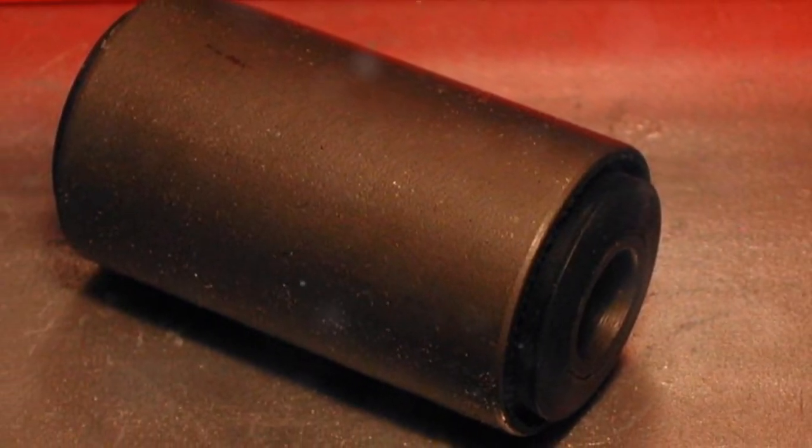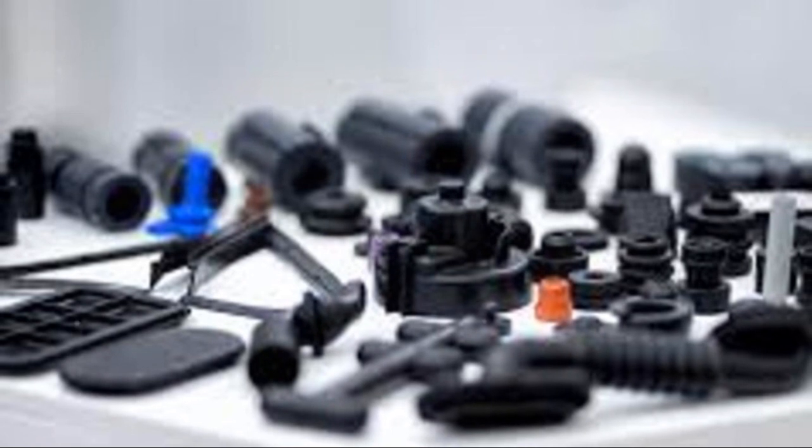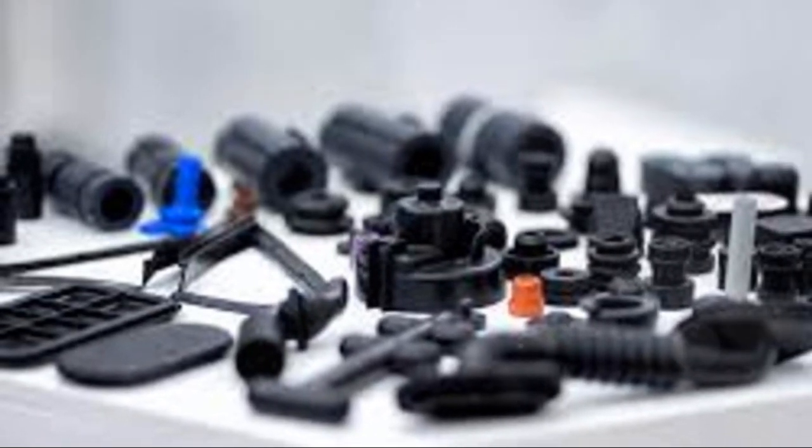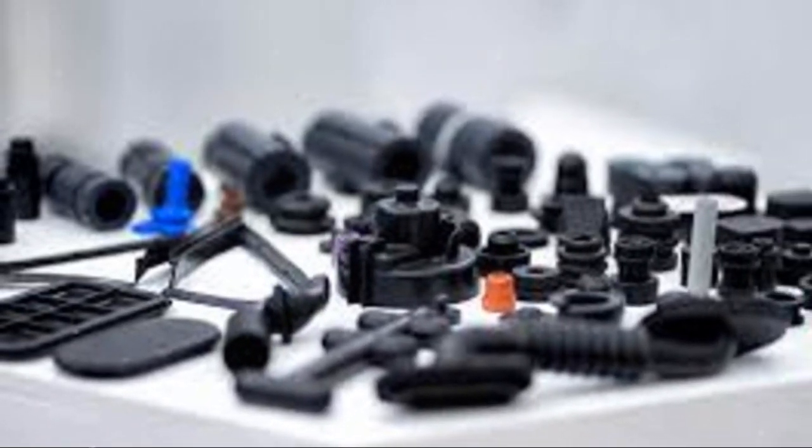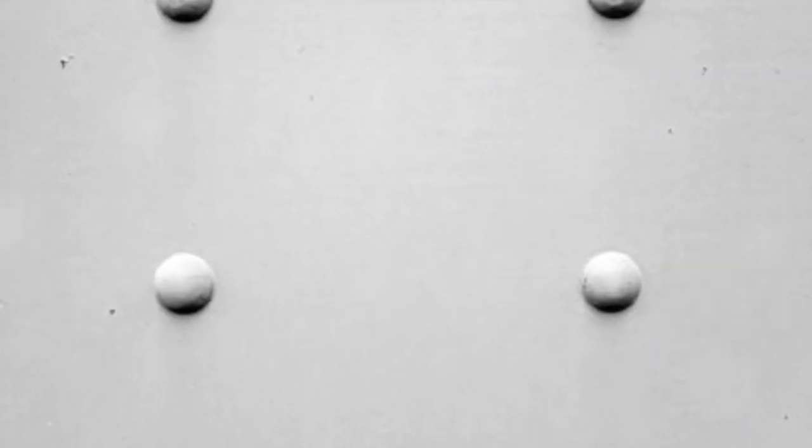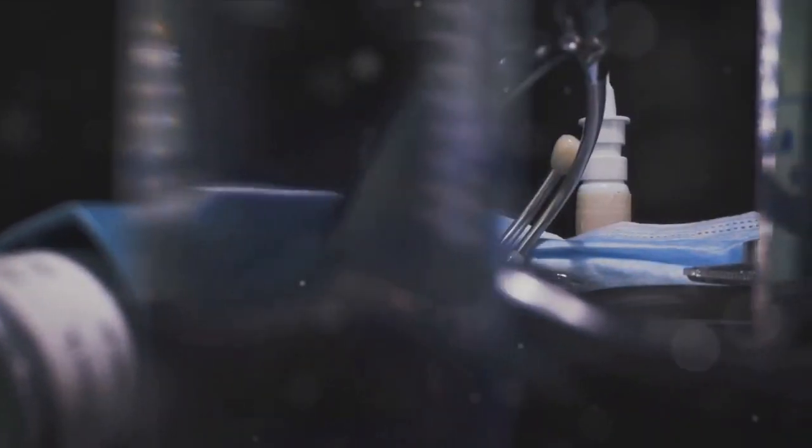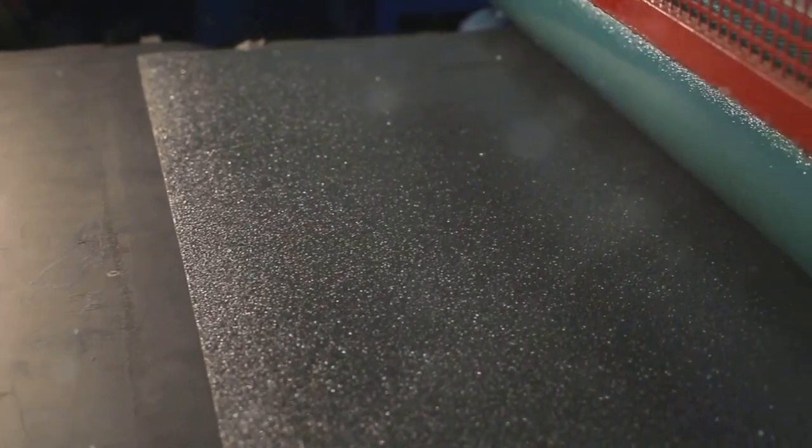First up, we have method A, where a rubber part is assembled between two parallel metal plates. This method is straightforward, allowing for direct testing of the rubber's adhesion to the metal.